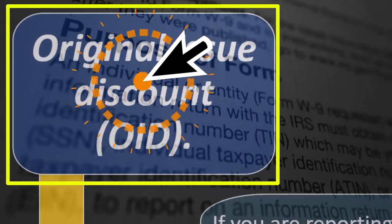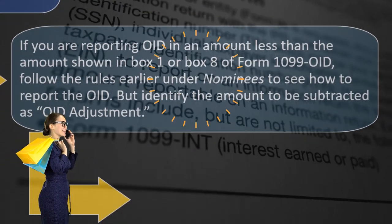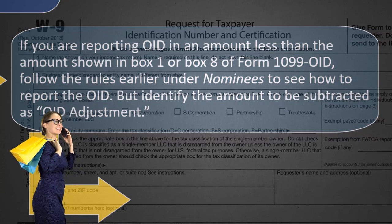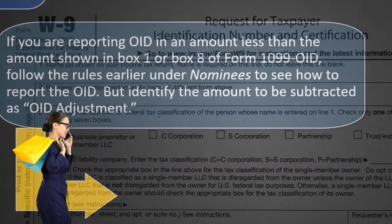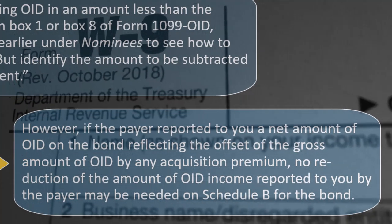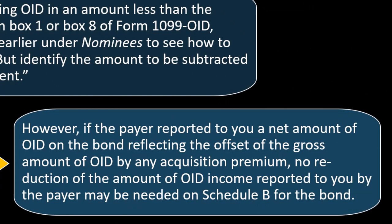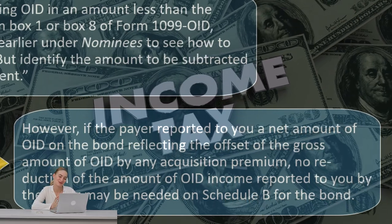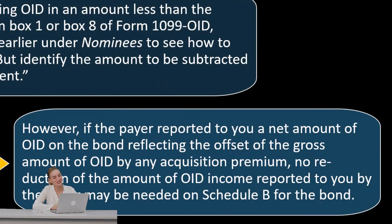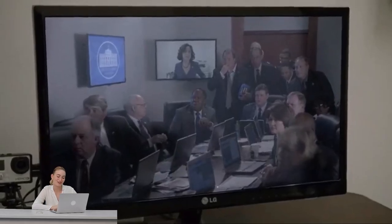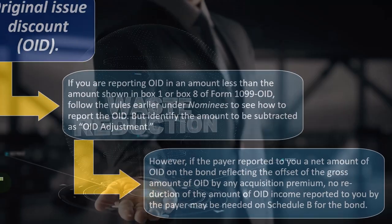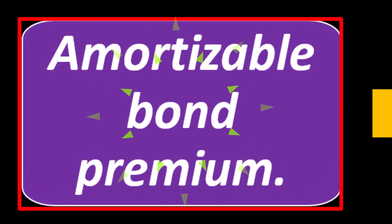For original issue discount (OID): if you are reporting OID in an amount less than the amount shown in box one or box eight of Form 1099-OID, follow the nominee rules to report the OID, identifying the amount to be subtracted as 'OID adjustment.' You need to show your work so the IRS isn't confused by a discrepancy between your return and the 1099. However, if the payer reported a net amount of OID reflecting the offset by any acquisition premium, no reduction of the OID income reported may be needed on Schedule B.